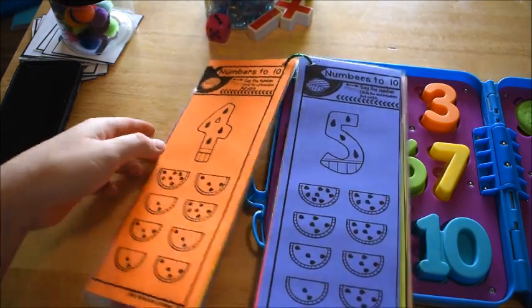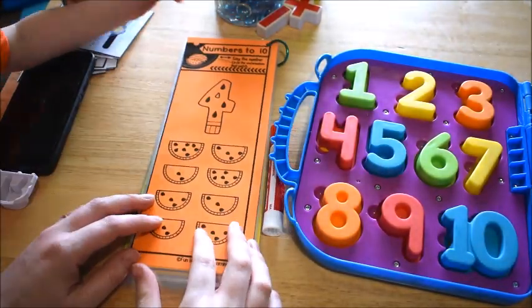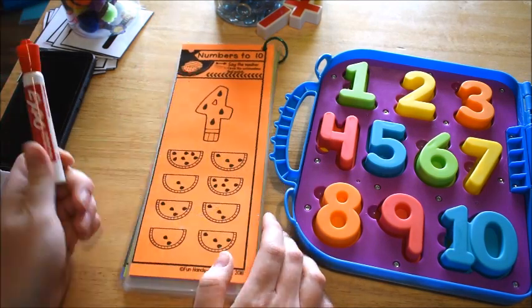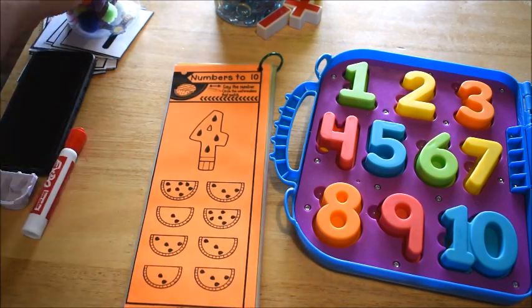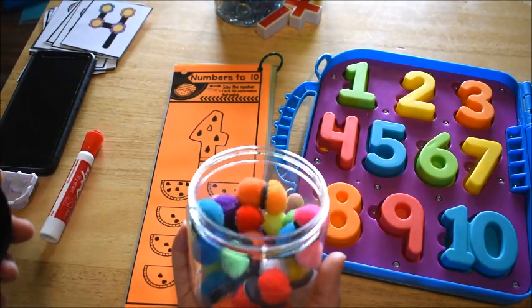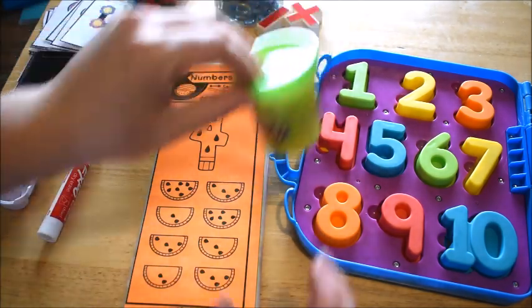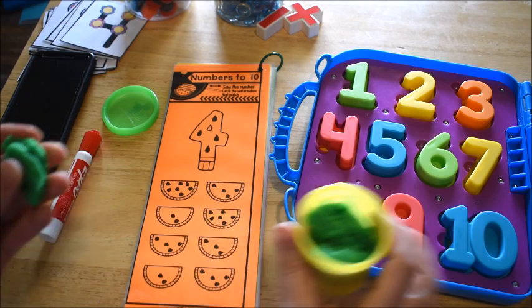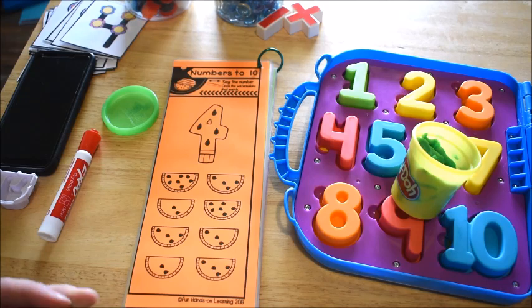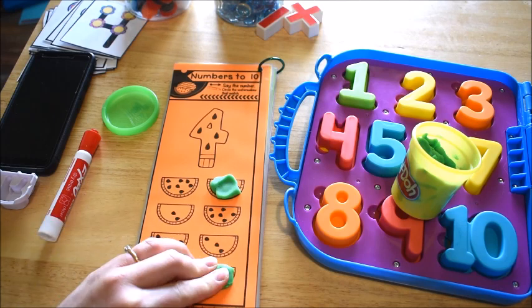Instead of using the marker and having them circle, because at this age a lot of them can't circle, they don't have those fine motor skills, you can use little toys. These are pom-poms with magnets attached and you can mark your answers. Or if they like play-doh, you can have them mark their answers with play-doh. They look at each piece of watermelon and the ones that have four, they can just put a piece of play-doh on.